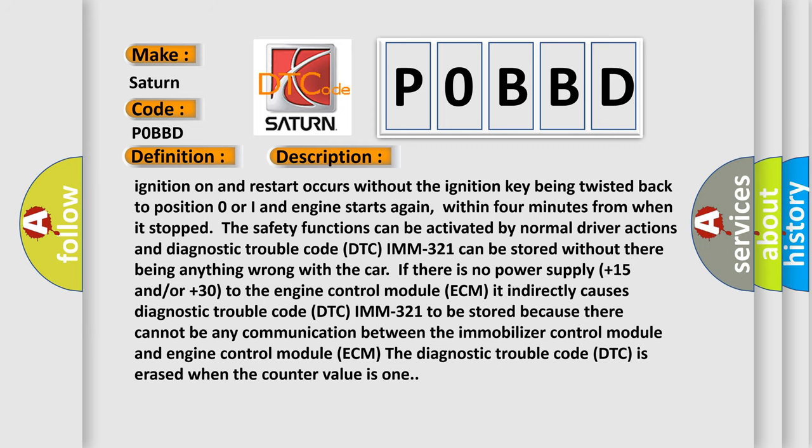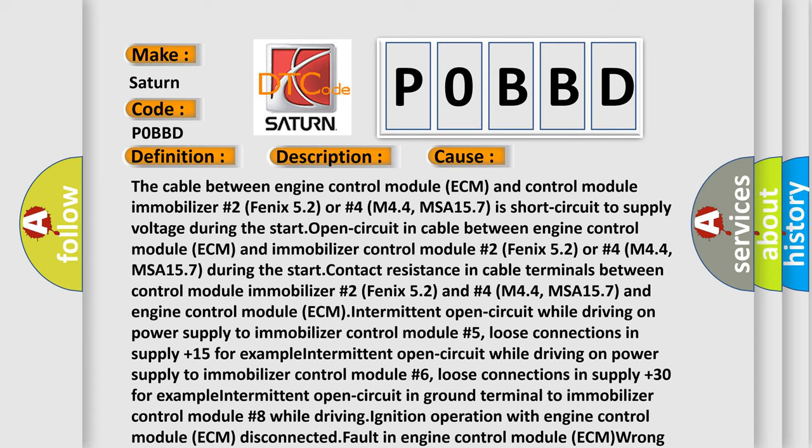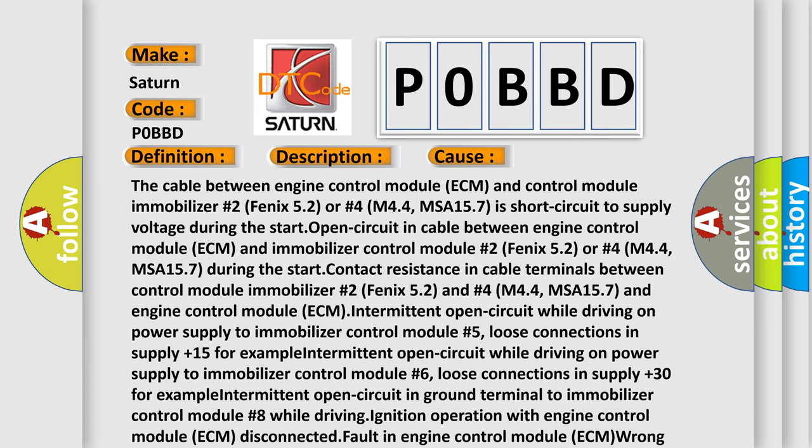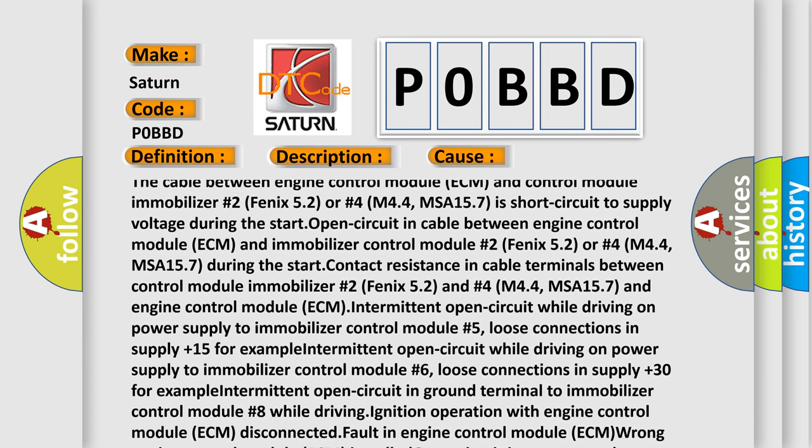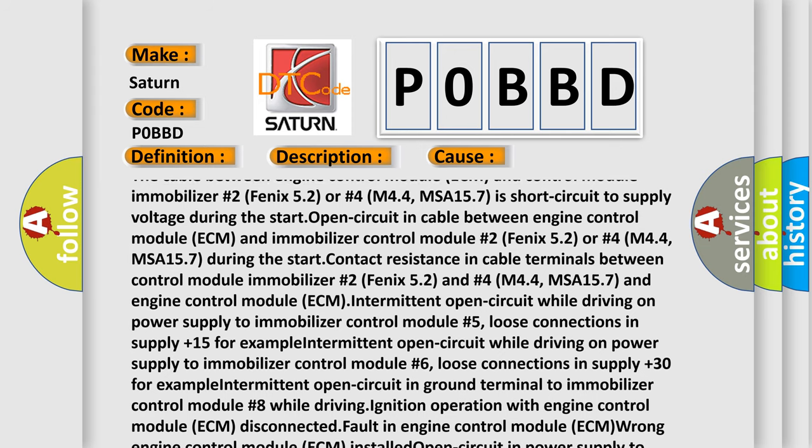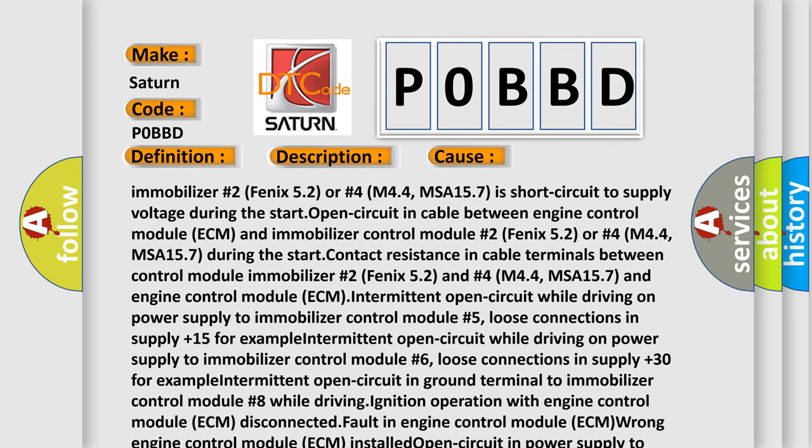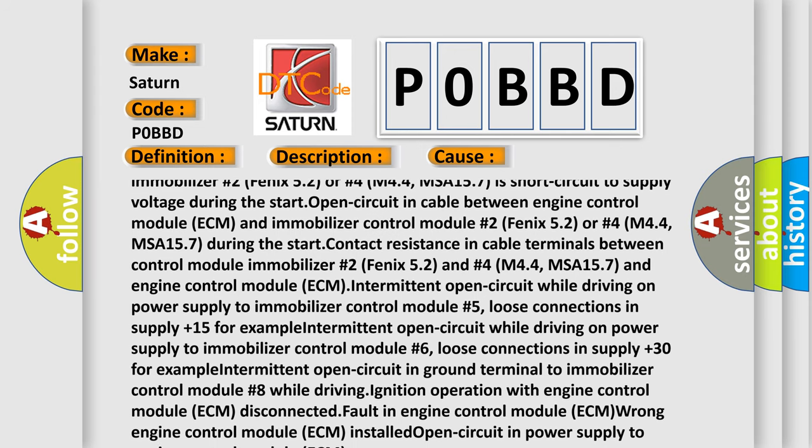This diagnostic error occurs most often in these cases: The cable between engine control module ECM and control module immobilizer number 2 Phoenix 5.2 or number 4 M44 MSA 15-7 is short circuit to supply voltage during the start. Open circuit in cable between engine control module ECM and immobilizer control module number 2 Phoenix 5.2 or number 4 M44 MSA 15-7.